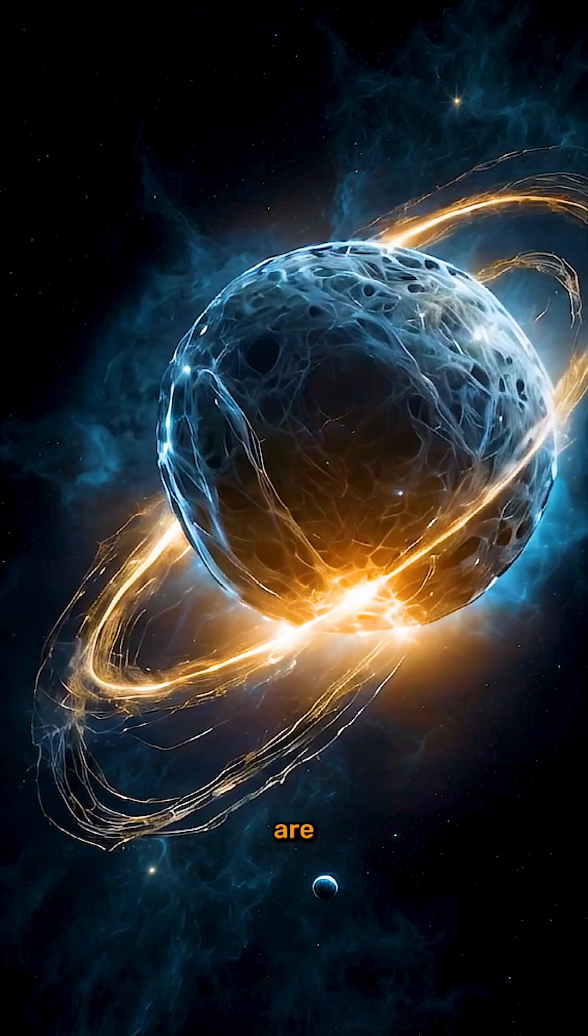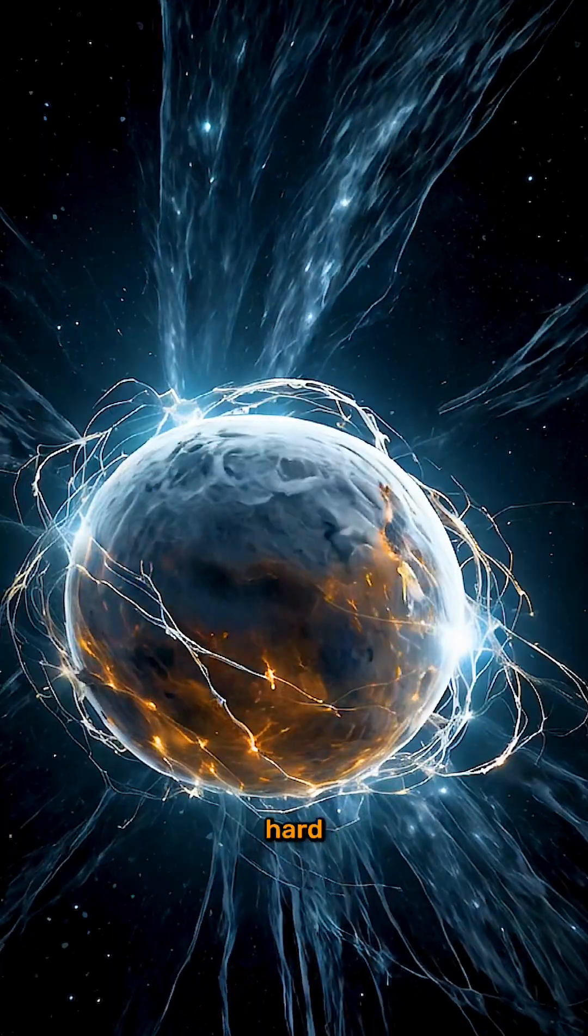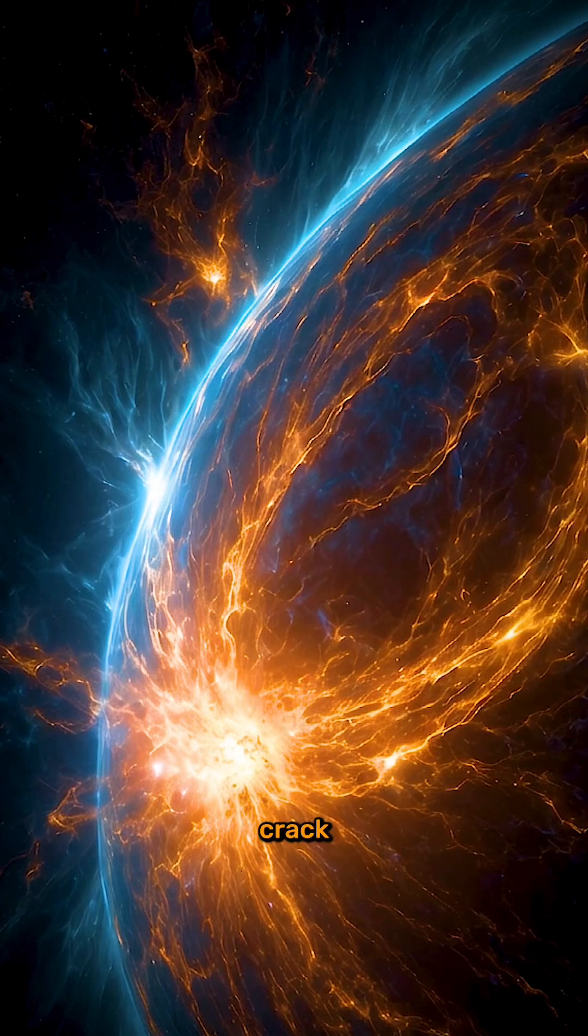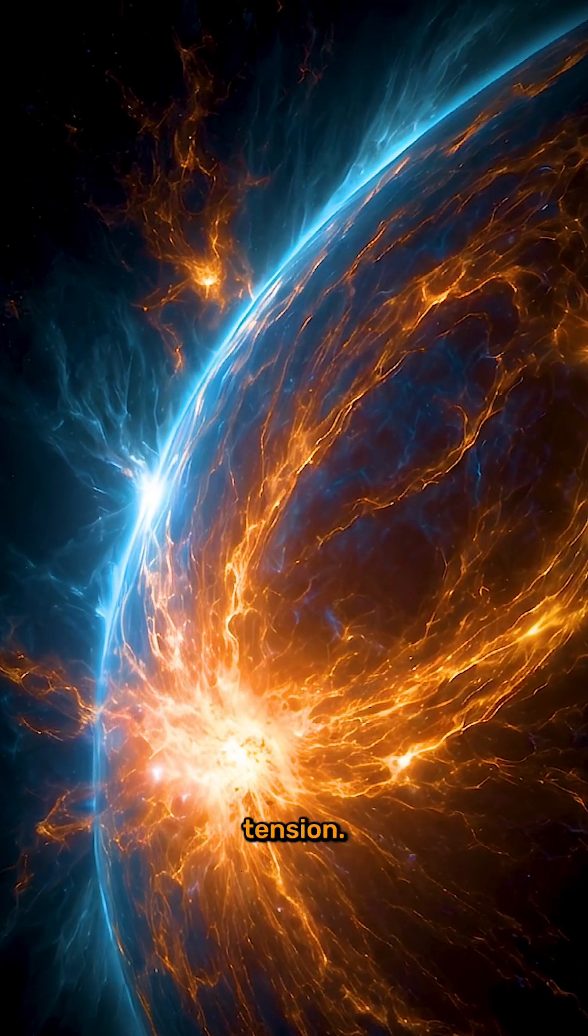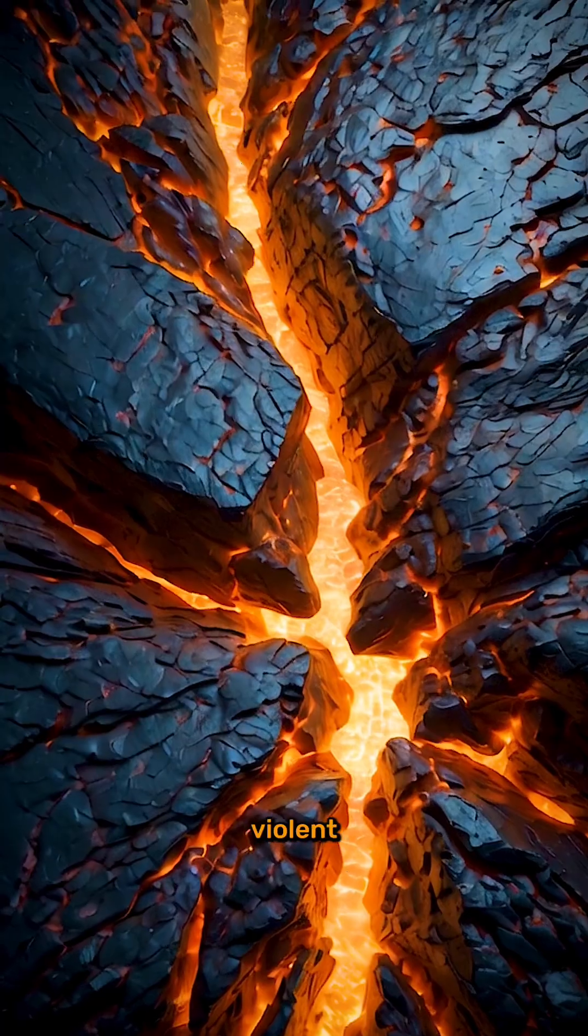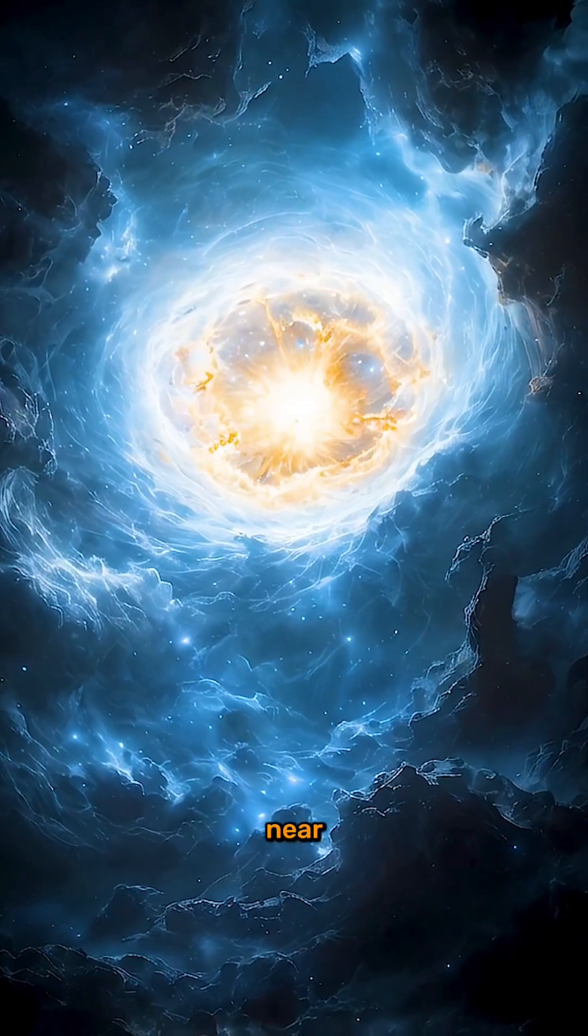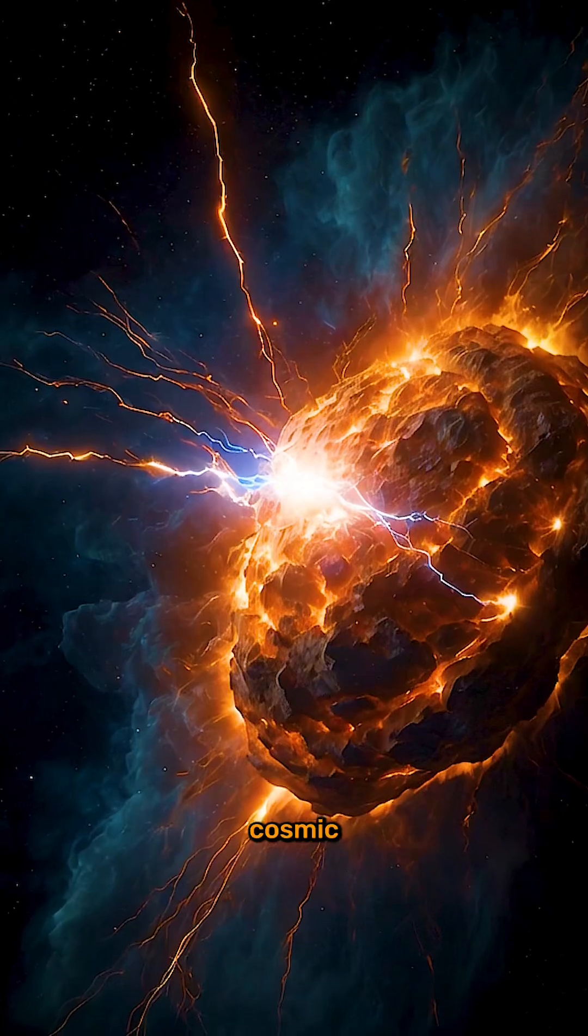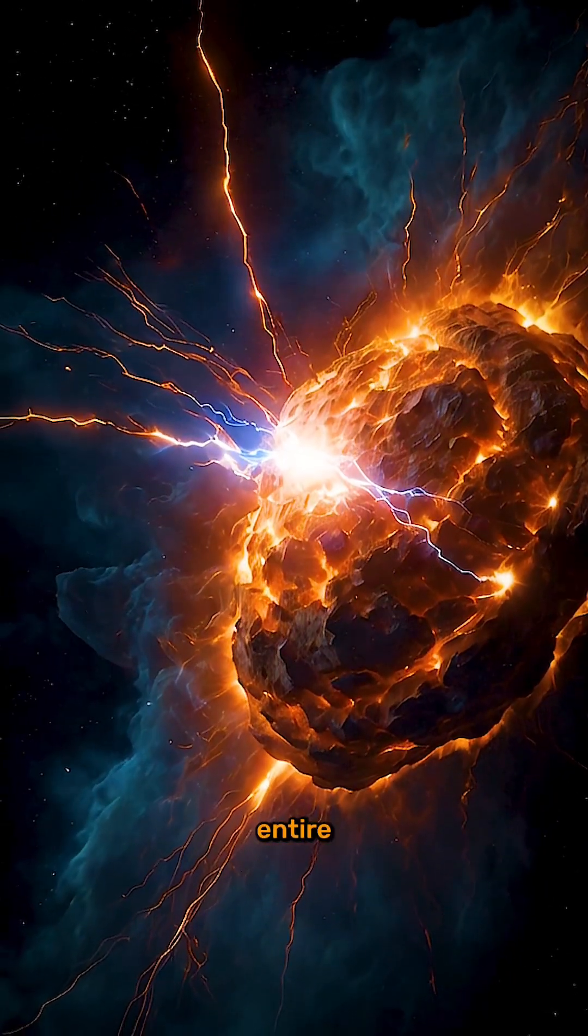Unlike normal stars, magnetars are wrapped in super dense, super hard crusts that occasionally crack due to the extreme magnetic tension. These starquakes unleash violent flares that travel at near light speed, sending out cosmic death waves that can fry entire solar systems.